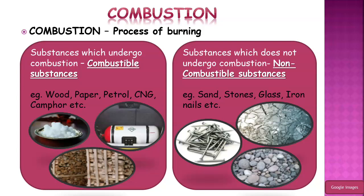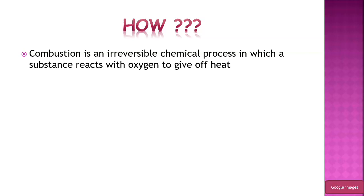Combustion is an irreversible chemical process or chemical reaction in which a substance reacts with oxygen to give off heat, and also light and flame. The combustion is a reaction of a substance with oxygen, and it is an irreversible chemical process. What do you mean by irreversible? If you are burning a piece of paper, you will get ash, and can you get back the paper from that ash? No, it's not possible. Such a kind of process in which you cannot get back the original substance in its original state is known as an irreversible process.